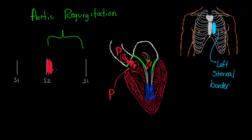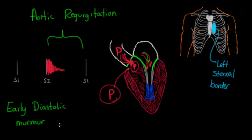As ventricular pressure gets a little bigger, the regurgitant flow diminishes. This gives aortic regurgitation its characteristic shape: an early diastolic, decrescendo murmur. The right-sided equivalent, pulmonic regurgitation, produces the same type of murmur — an early diastolic decrescendo — but is heard along the upper left side of the sternum, whereas aortic regurgitation is heard generally along the left sternal border.